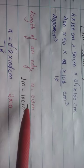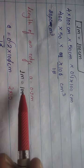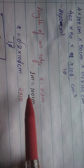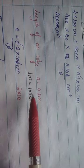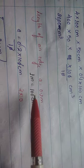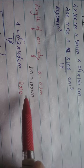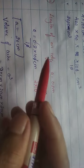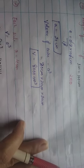The third part: the length of an edge is 0.2 m. Since 1 m = 100 cm, we multiply 0.2 by 100 to get 20 cm. Volume of a cube = a³ = 20 × 20 × 20 = 8000 cm³.